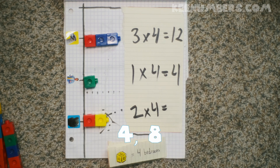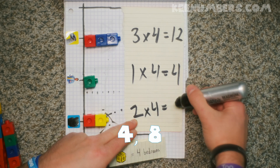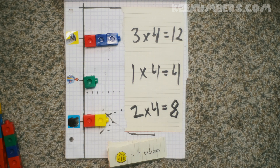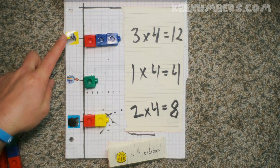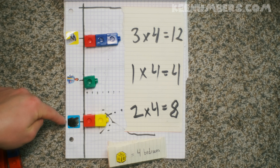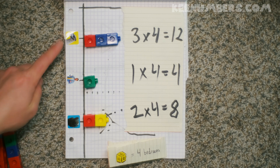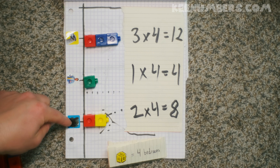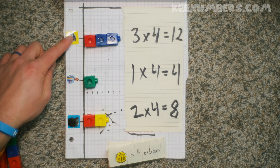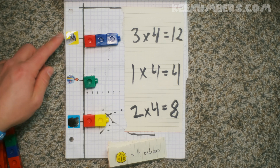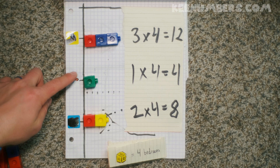What's two fours? Four, eight — bada boom bada bing, two fours is eight. In this example, pirate Sam has twelve bedrooms, I have four bedrooms, and the greater gator has eight bedrooms. So pirate Sam has the most, the greater gator is in the middle with eight, and I have the least with four.